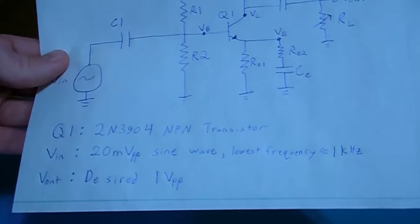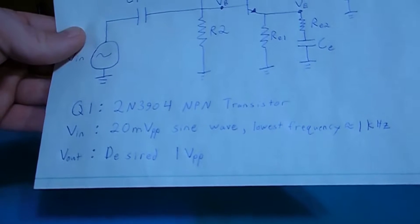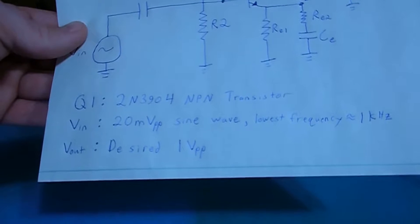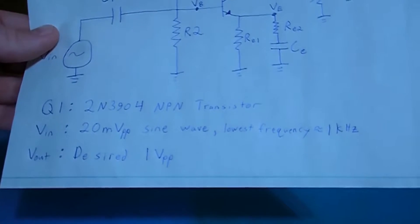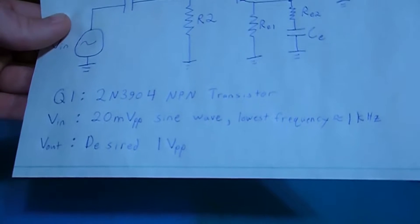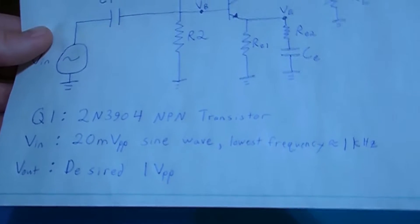We're going to use a 2N3904 transistor. We're going to presume that we have a 20 millivolts peak-to-peak sine wave with our lowest frequency of interest being 1 kilohertz. And we're going to try to get a 1 volt peak-to-peak output signal from this circuit.